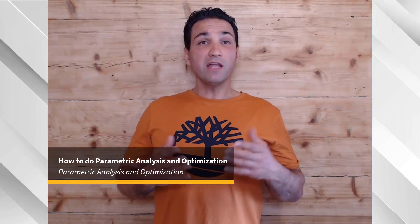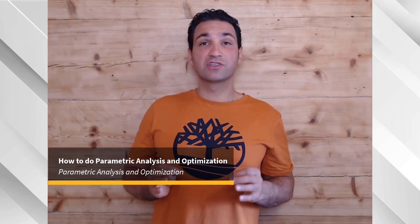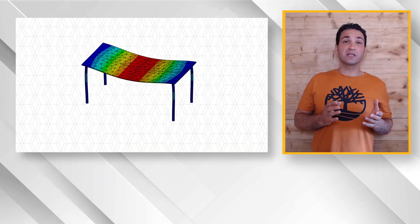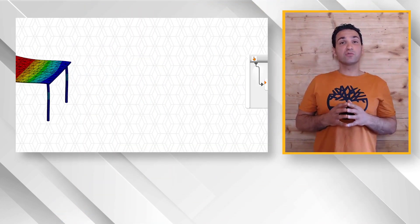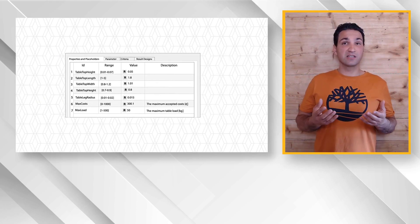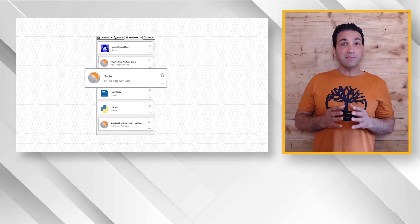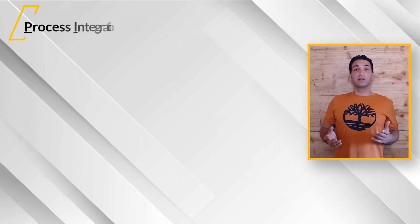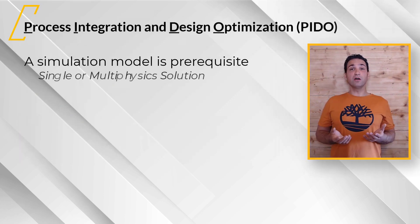After explaining why to do parametric analysis, I want to answer the question: how do we do it? Let me walk you through the whole process, starting from an individual simulation to a standardized engineering process that can be published to a larger user group. The starting point is your main simulation model.